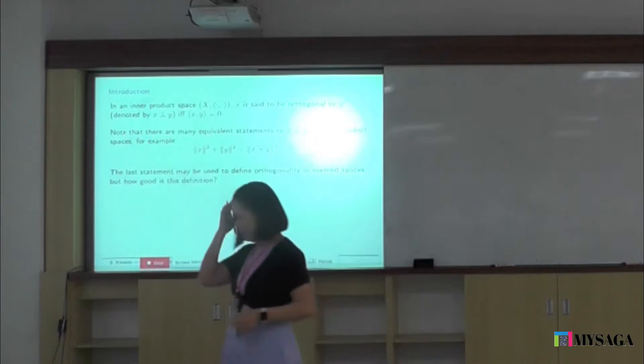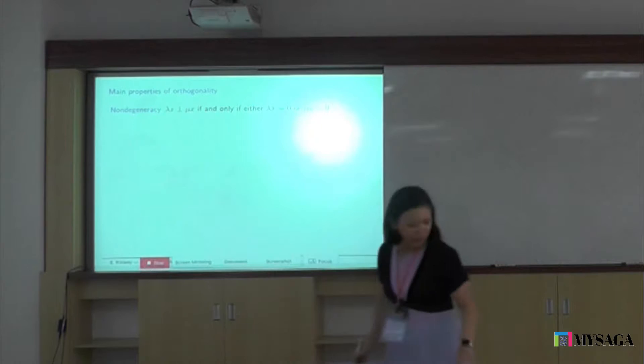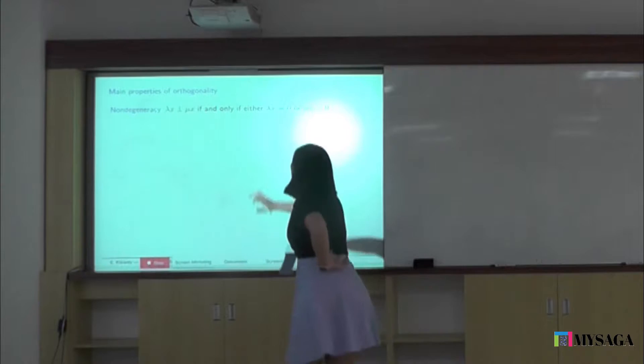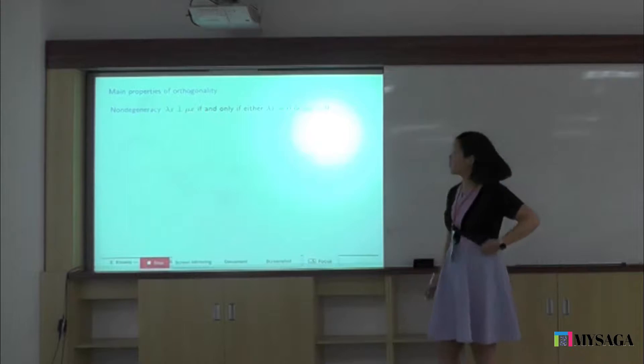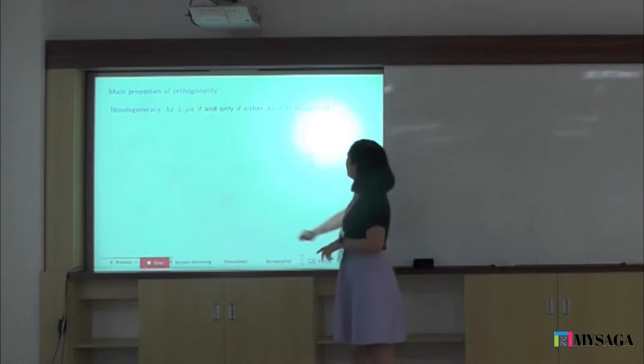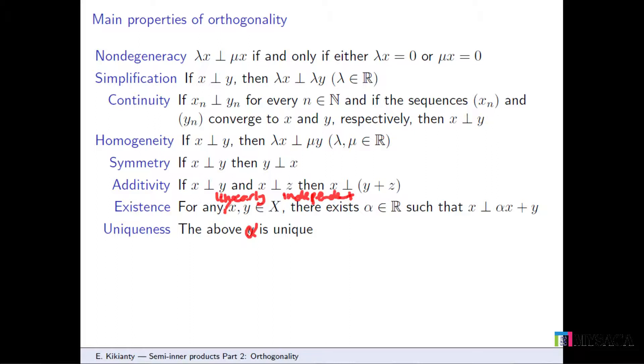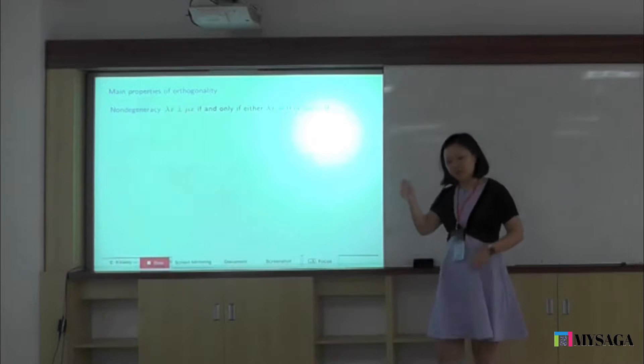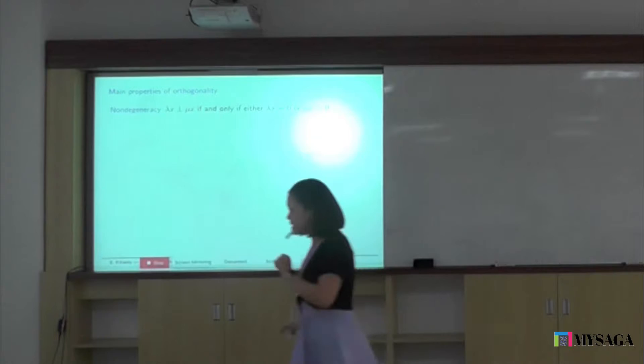You all have the handouts, so let's follow it carefully so you don't have to do vigorous writing. There are some main properties of orthogonality that are listed in some literature. One of them is non-degeneracy. If you have lambda x orthogonal to nu x, this is true if and only if either one of them is zero. A vector is orthogonal to itself or any scalar multiple only if it's zero. That makes sense.